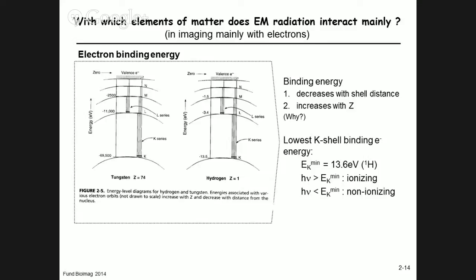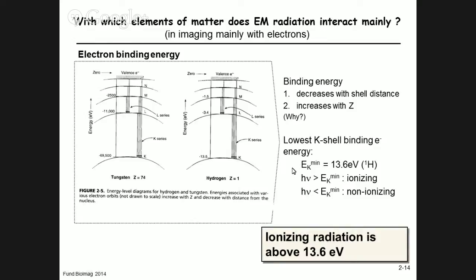The lowest K shell binding energy you can find is that of the hydrogen atom at 13.6 electron volts. This now defines ionizing radiation: if your photon energy hν is above the K shell binding energy of hydrogen, the radiation is considered ionizing. If it's below, it's considered non-ionizing. To put it simply, ionizing radiation has photon energies above 13.6 electron volts.